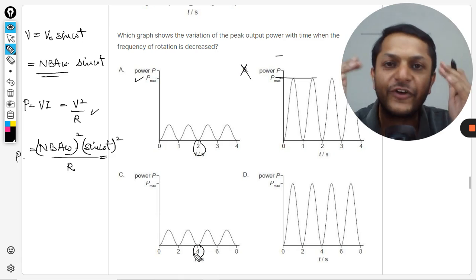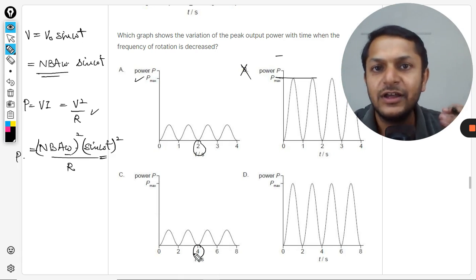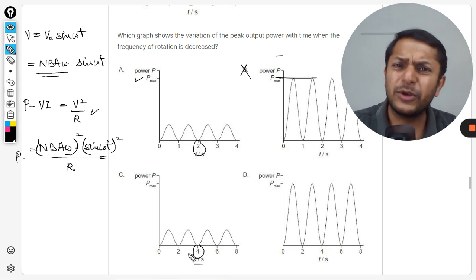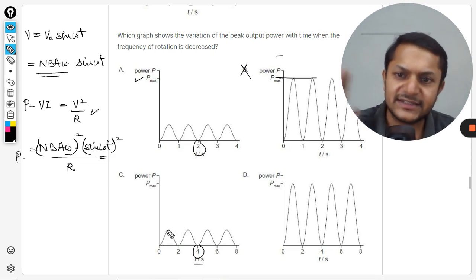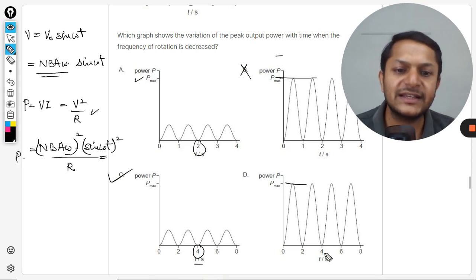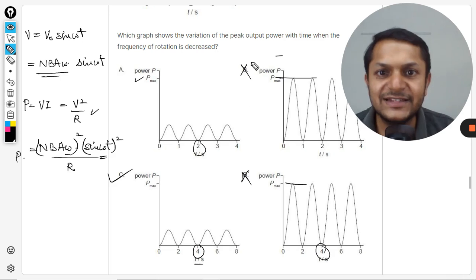I will not say that yes, this is the case because it is not given that frequency is actually getting half. That is not written, so it should be more than two. It could be three, three point five, four, five, six, whatever, but yes, this is correct. In D, the amplitude is not reducing but yes, the time period is increasing, so D is wrong.